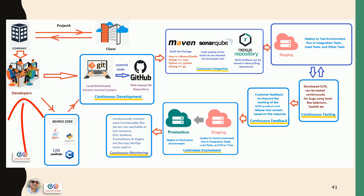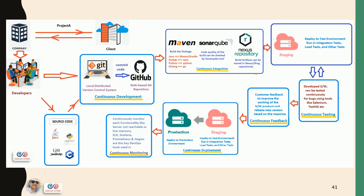Suppose you have chosen 5 developers to complete this project. Developers will first collect the information of the project and decide which language they are going to use. Here we have a number of source code options. Suppose the developers have decided they are going to use Java to write this code. So the developers will start working on their laptops. For source code management, developers can use any tool — for this example I am taking Git. Developers will install Git on their laptops and start writing the code. In GitHub, which is a centralized web-based Git repository, you have to create a repository for this project. All 5 developers working on this project will start writing code and coordinate with each other.